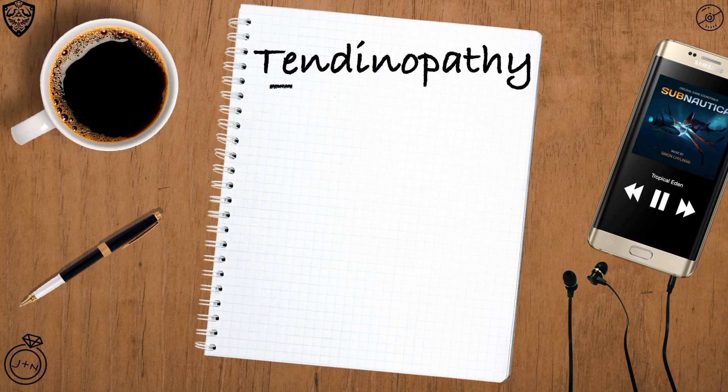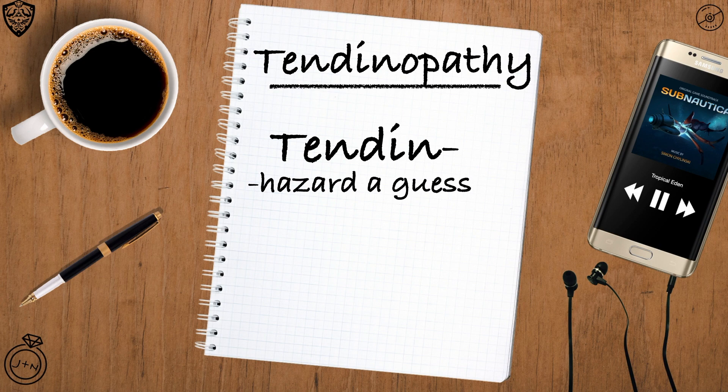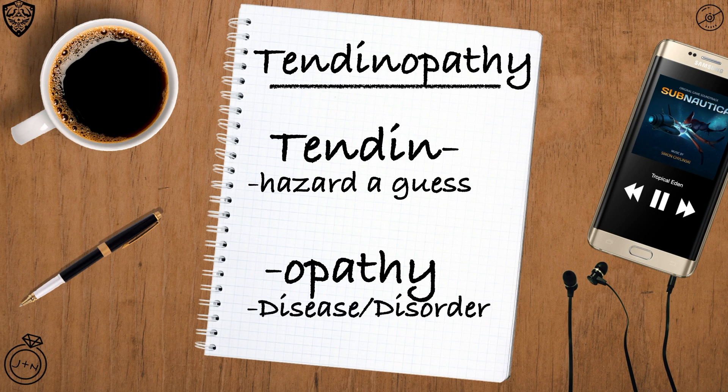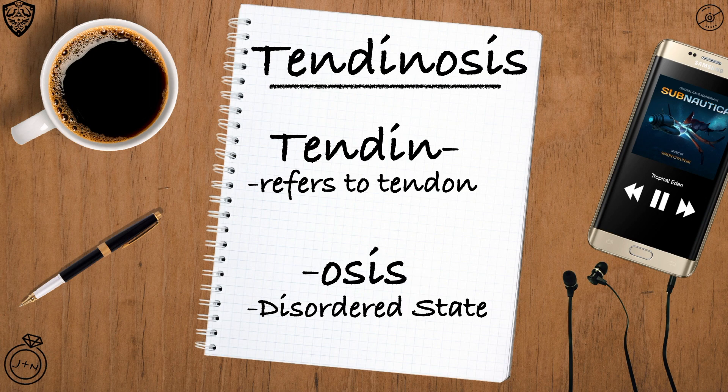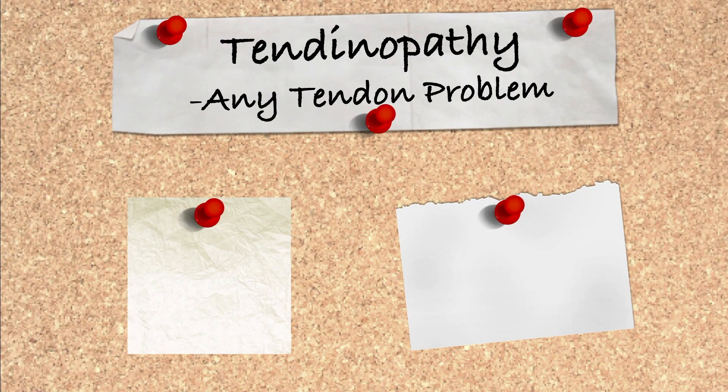The ending '-opathy' generally refers to a disease or disorder. Put those together and tendinopathy is a disease or disorder within a tendon — not to be confused with tendinosis, which is a tendon in a disordered or abnormal state. Basically, tendinopathy refers to anything bad that could happen to a tendon. This means it is the umbrella term that could be referring to either tendinitis or tendinosis.